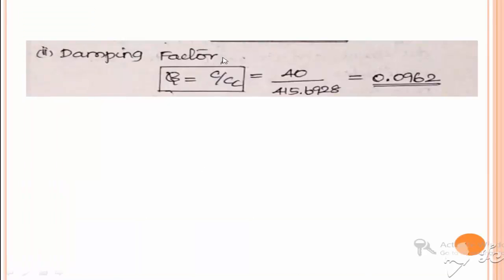Next, the damping factor zeta is the ratio between damping coefficient and critical damping coefficient. The damping coefficient c = 40 N·s/m and cc = 415.6928 N·s/m, so zeta = 40 / 415.6928 = 0.0962. Since the damping factor is less than 1, the system is said to be in an underdamped vibration condition.